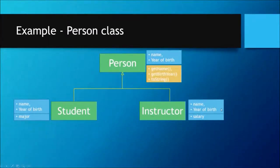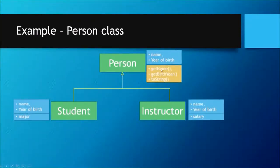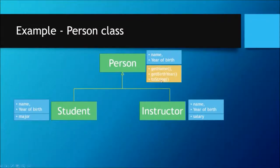Now let's look at what actions the Person class can do. The Person class will have the following methods: getName, getBirthYear, and toString. getName returns the name of the person, getBirthYear returns the year of birth, and toString prints the person's name and year of birth.